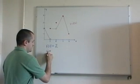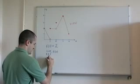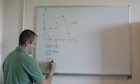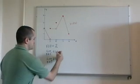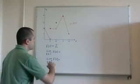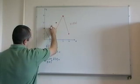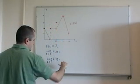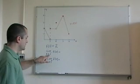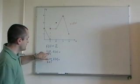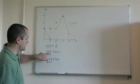Now let's calculate the limit as x tends to 1 from the left of f of x, and the limit as x tends to 1 from the right of f of x. If it helps, you could draw in a vertical line where x equals 1. Everything along that green line has an x value of 1 — travel towards it from the left-hand side, then from the right-hand side. That's what the little minus and plus signs mean.